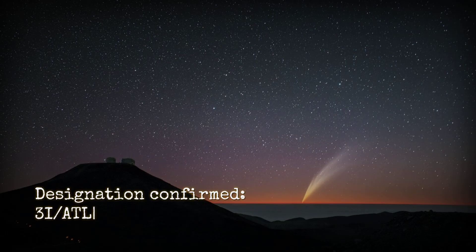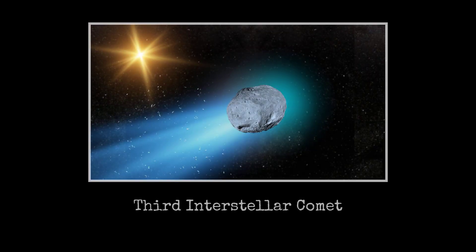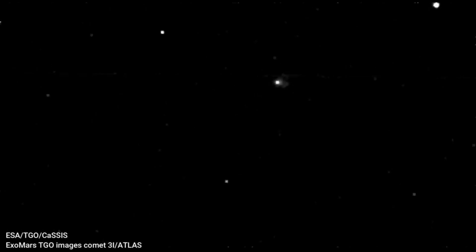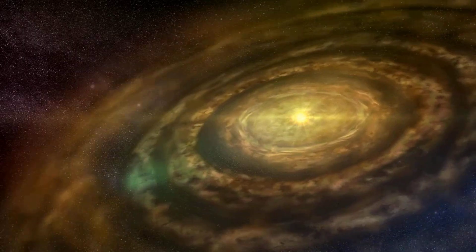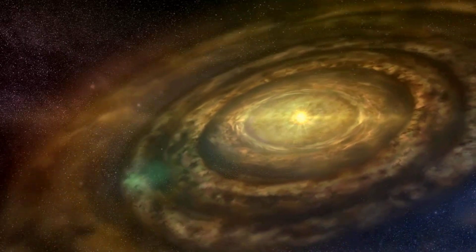The designation came quickly: 3I-Atlas, the third interstellar comet ever detected by humanity. The discovery sent a ripple through the astronomical community. For centuries, every comet catalogued had belonged to our own solar system, shaped by the same ancient disk of gas and dust that formed Earth.